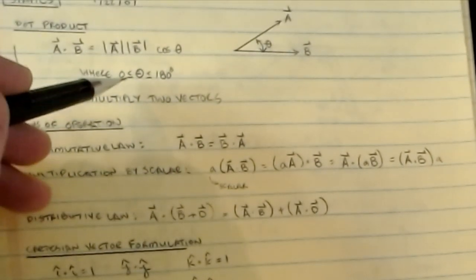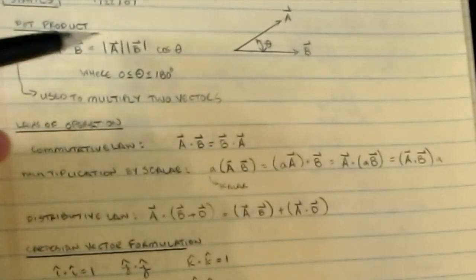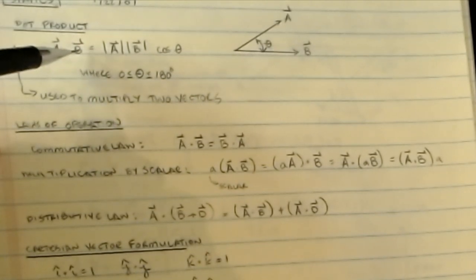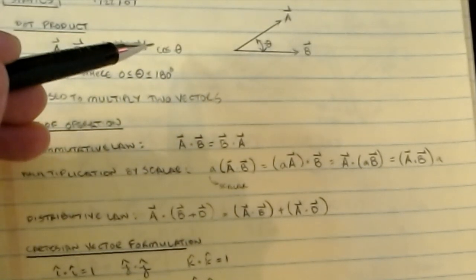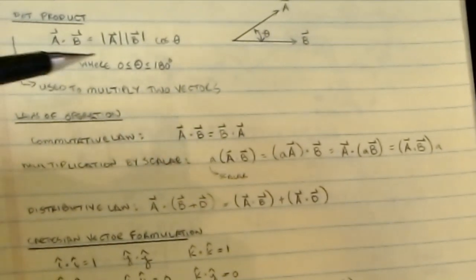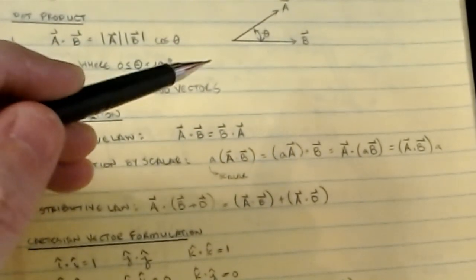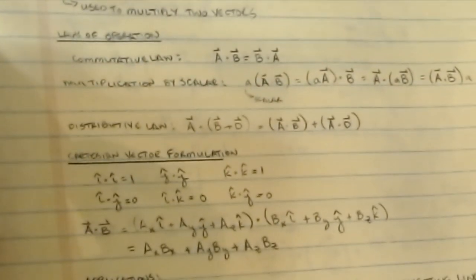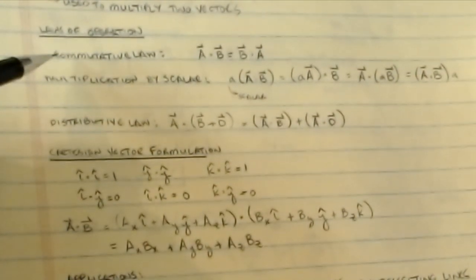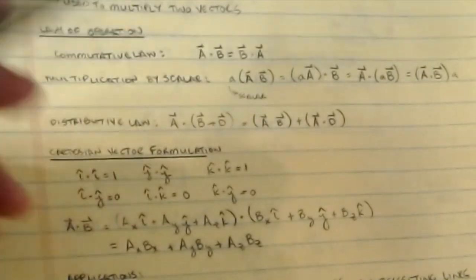Theta is limited to be between 0 and 180 degrees. This is a very convenient trick — if you have the vectors themselves, you can find the magnitude using the Pythagorean theorem and then find the angle between them in degrees. Note that this angle is not in any given Cartesian plane; it is the angle between the vectors in the plane that contains both of them. The commutative law states that A·B equals B·A, so order doesn't matter.